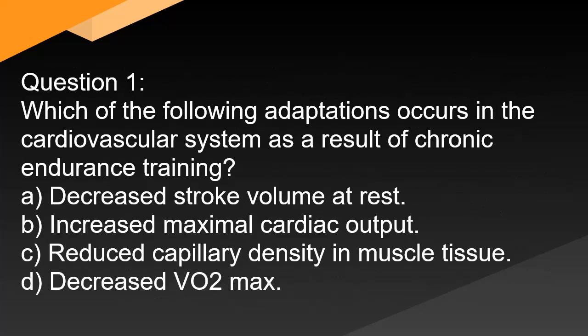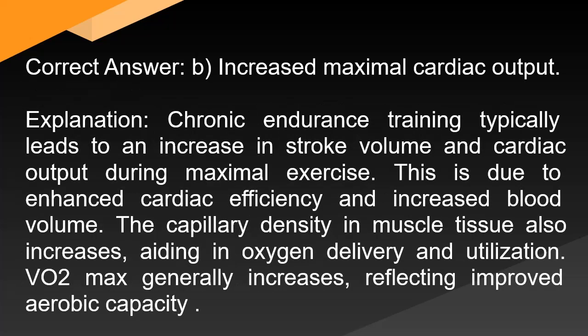Question 1: Which of the following adaptations occurs in the cardiovascular system as a result of chronic endurance training? A. Decreased stroke volume at rest. B. Increased maximal cardiac output. C. Reduced capillary density in muscle tissue. D. Decreased VO2max. Correct answer: B. Increased maximal cardiac output. Chronic endurance training leads to an increase in stroke volume and cardiac output during maximal exercise, due to enhanced cardiac efficiency and increased blood volume. Capillary density in muscle tissue also increases, aiding oxygen delivery. VO2max generally increases, reflecting improved aerobic capacity.